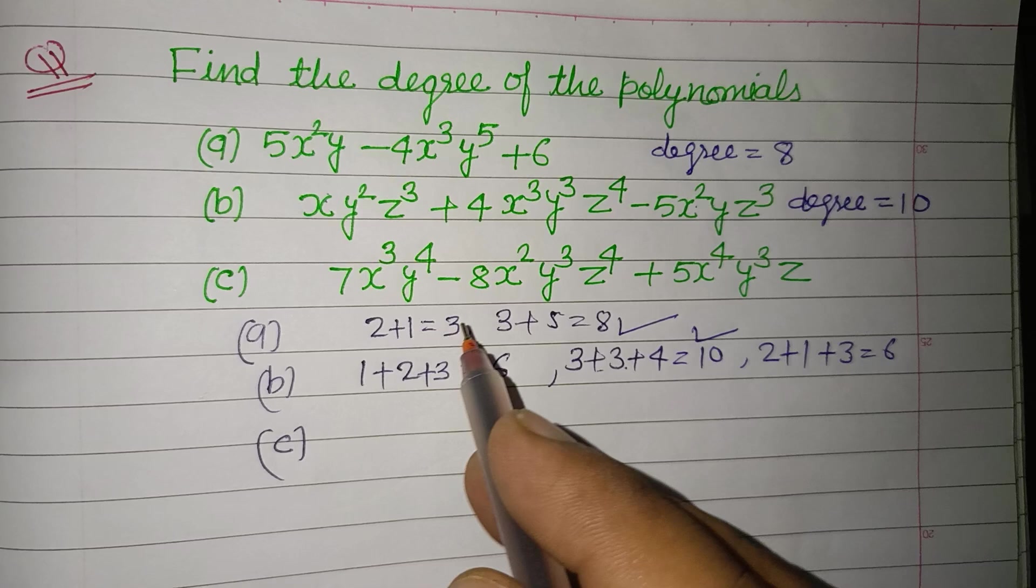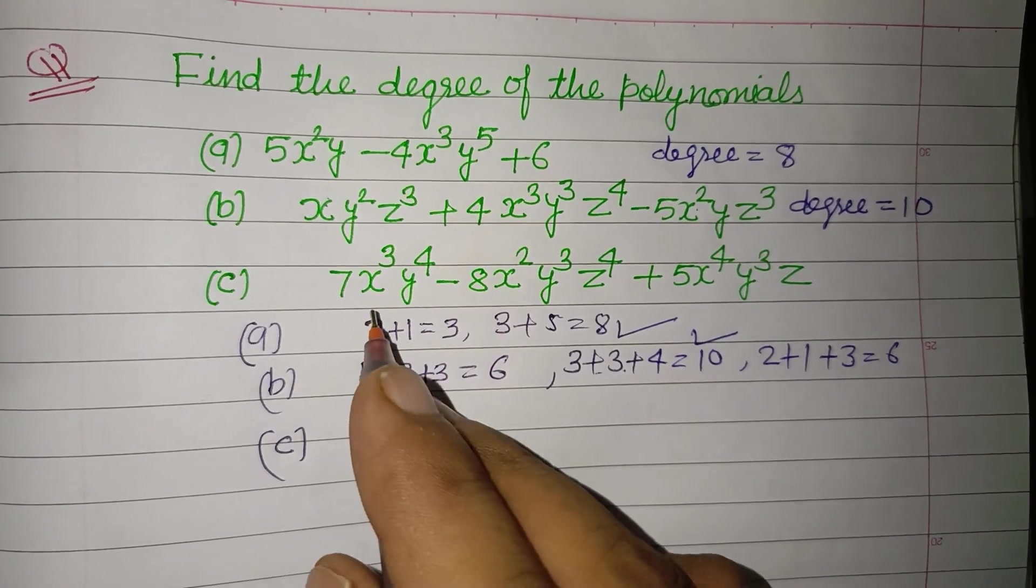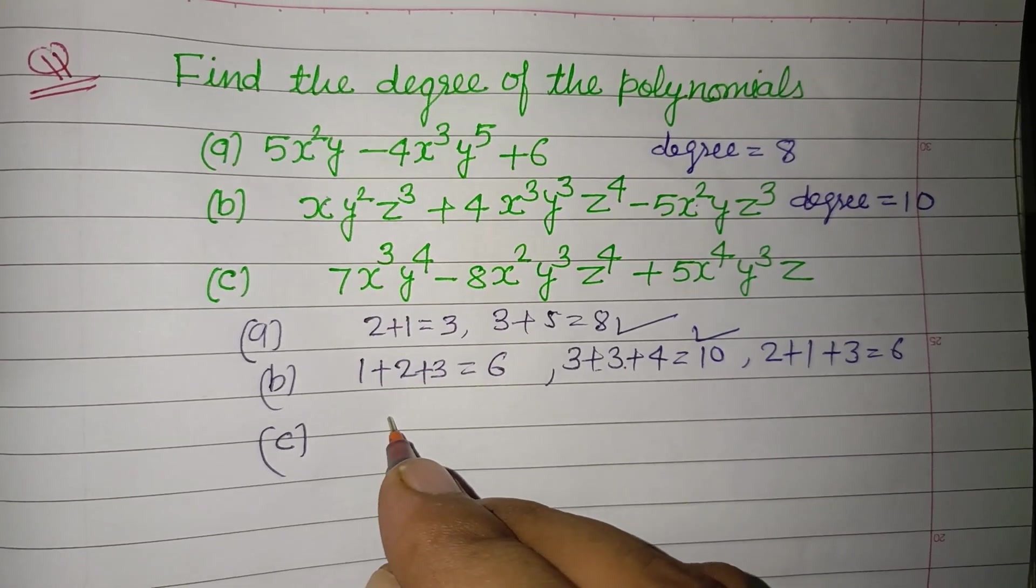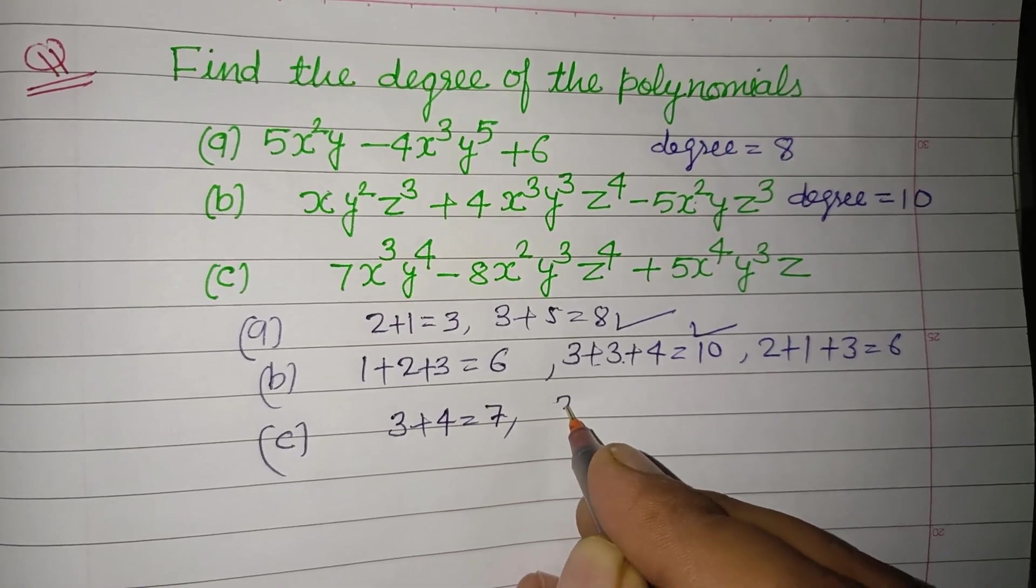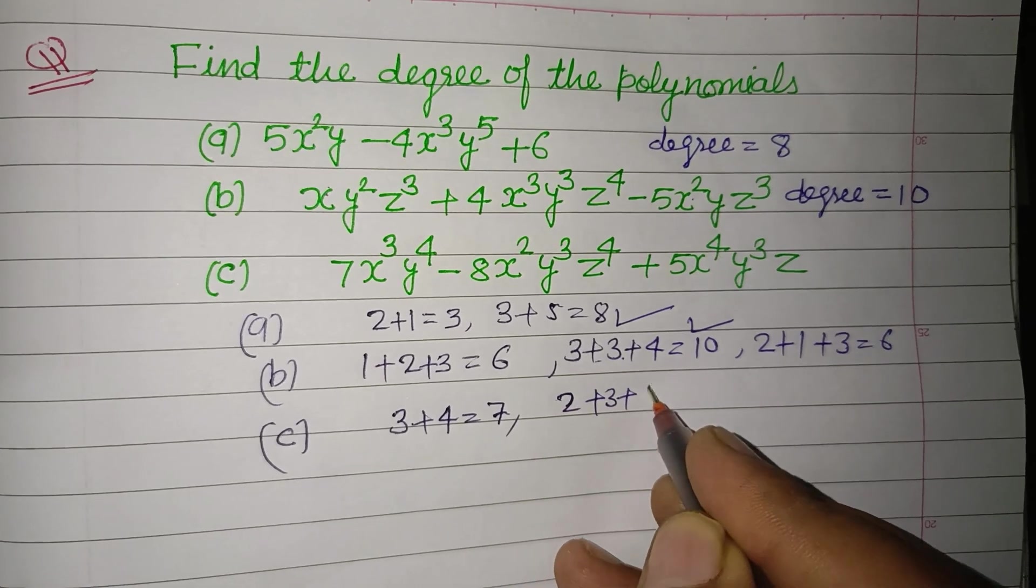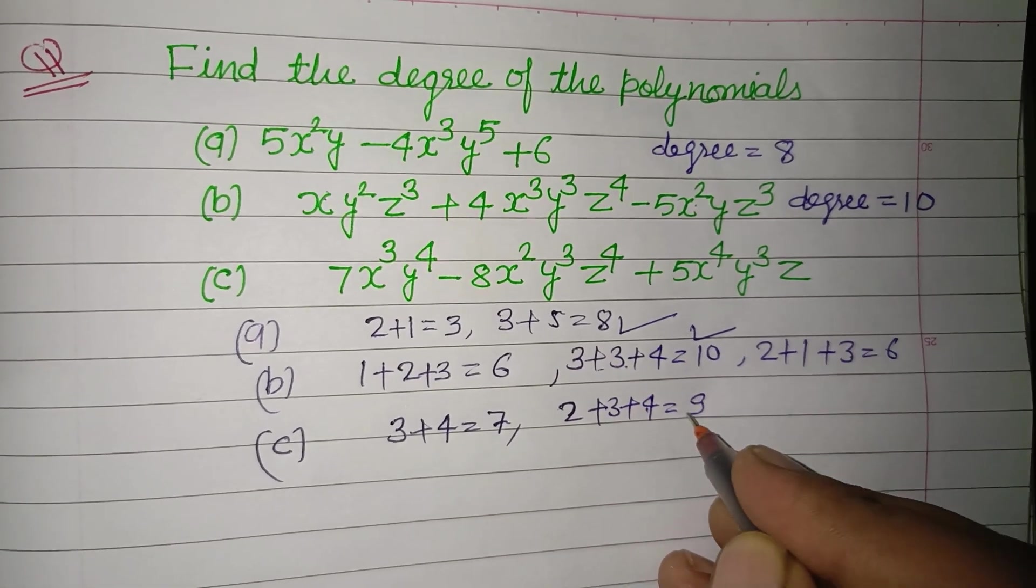Then now in C, the first term powers are 3 plus 4, this is 7. And second term powers are 2 plus 3 plus 4, 7 plus 2, 9.